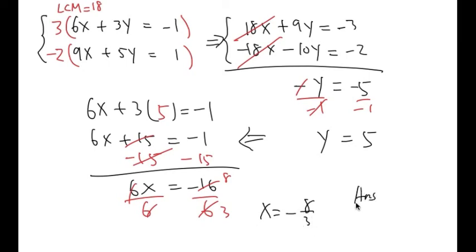For the answer, we're going to write it as an ordered pair. Put the x first, which is negative 8 over 3, comma, the second number is for y, which is 5. The first number is x, the second number is y, and this is how we present the answer.